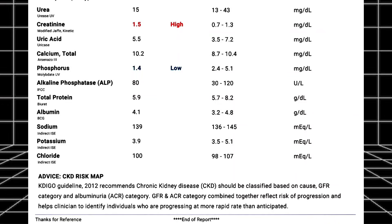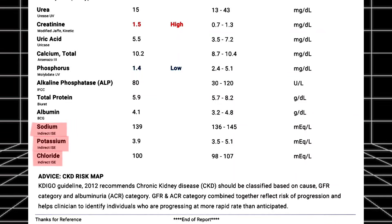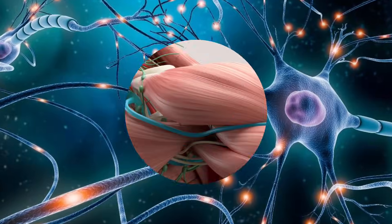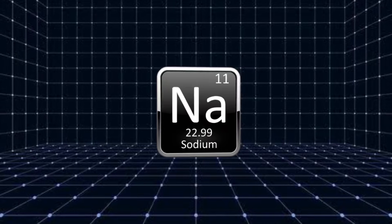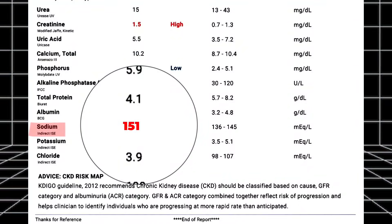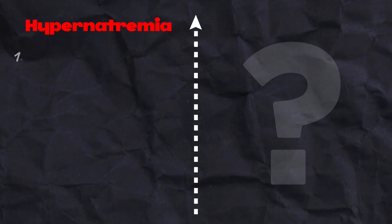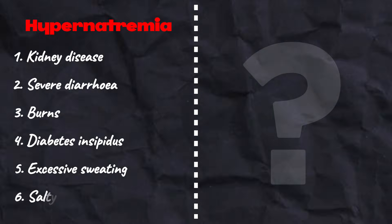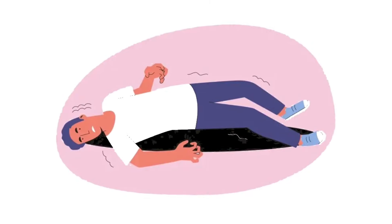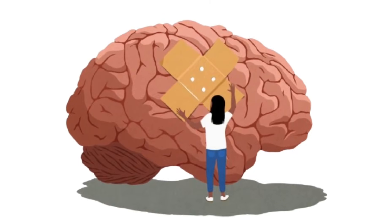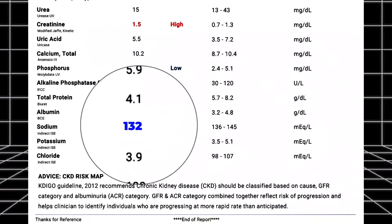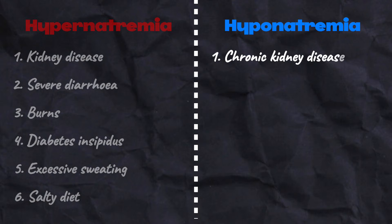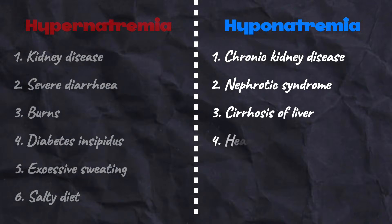Now let's move on to the electrolytes: sodium, potassium, and chloride. Sodium is a mineral that helps maintain fluid balance, blood volume, and nerve and muscle function. High sodium level in blood is called hypernatremia, caused by kidney disease, severe diarrhea, burns, diabetes, excessive sweating, and too much salt in the diet — and it can complicate into seizures, loss of consciousness, brain damage, and even death. Low sodium is called hyponatremia, seen in chronic kidney disease, nephrotic syndrome, cirrhosis of the liver, heart failure, and carcinoma.